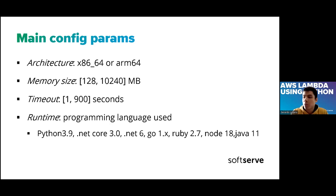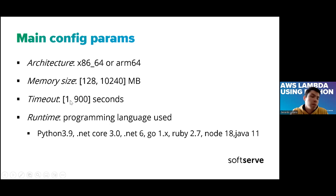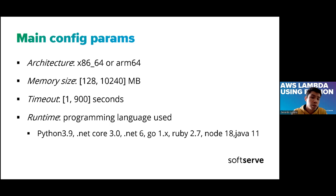The main configuration parameters are the following. We have two options for architecture and a memory size range between certain megabytes. The timeout is also a range — basically, if your code lasts more than this number of seconds, the Lambda is going to be killed regardless of whether your code is finished. So we need to take care of this time limit. The runtime is basically the programming language you use.